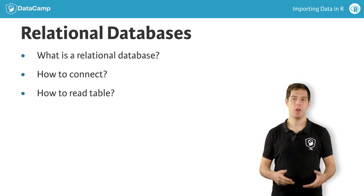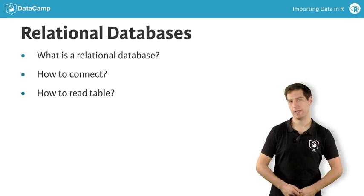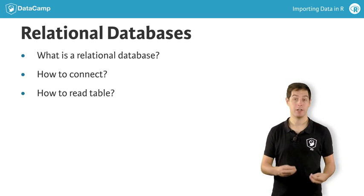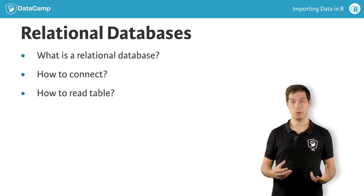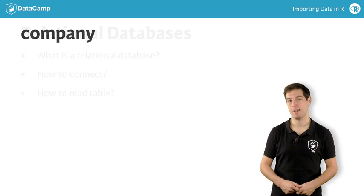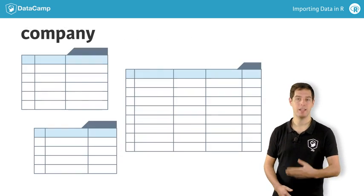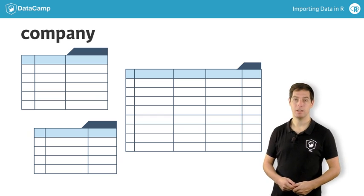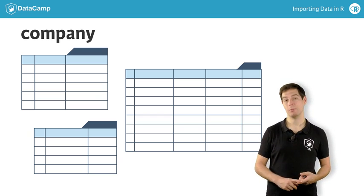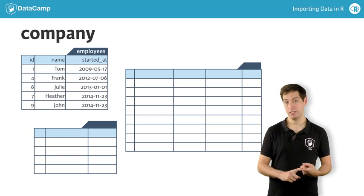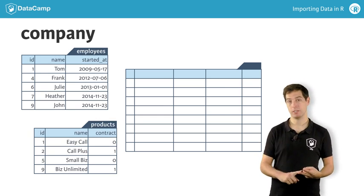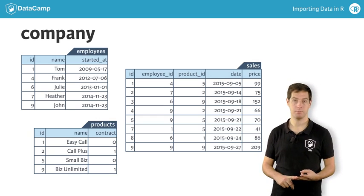So, what's a relational database? There's no better way to show this than with an example. Take this database called Company. It contains three tables: Employees, Products, and Sales.